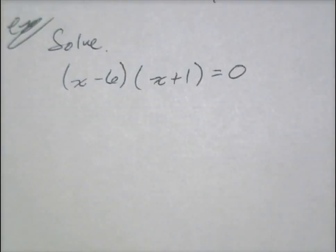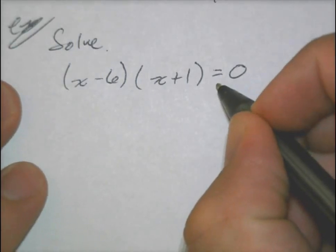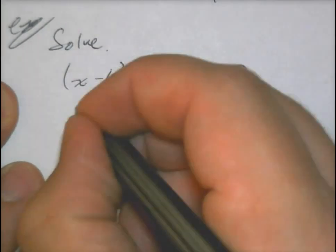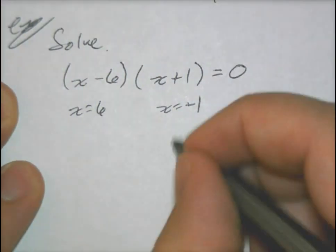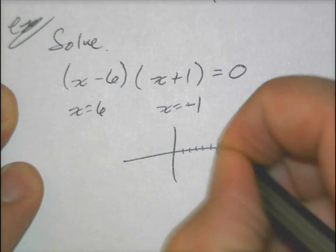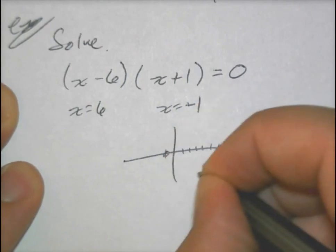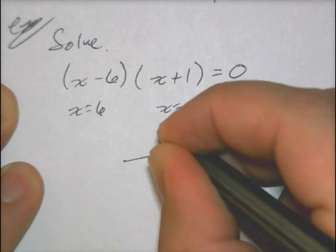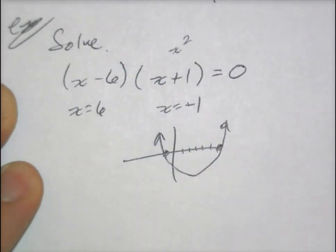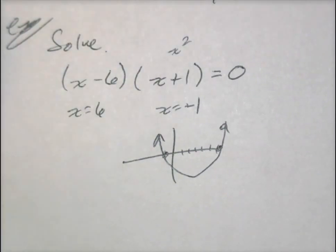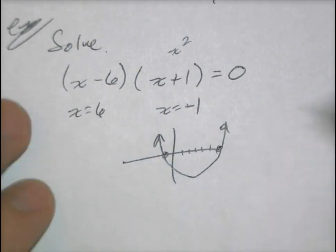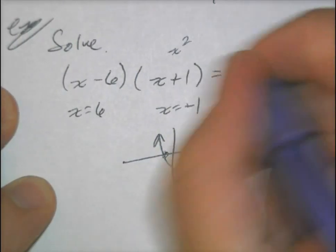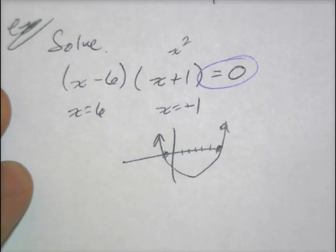I'm going to start out simple and start out with an equality. Remember, it is an equality because it has an equal sign. In this one, x equals 6 and x equals negative 1. These are the points where your parabola — because the highest exponent is x squared — would have zeros, the points where they are equal to zero. That's why they're called zeros or solutions.